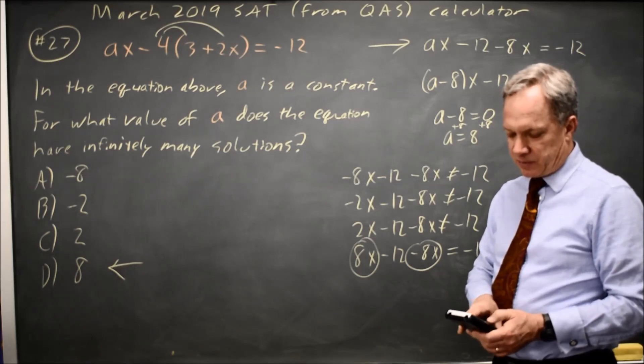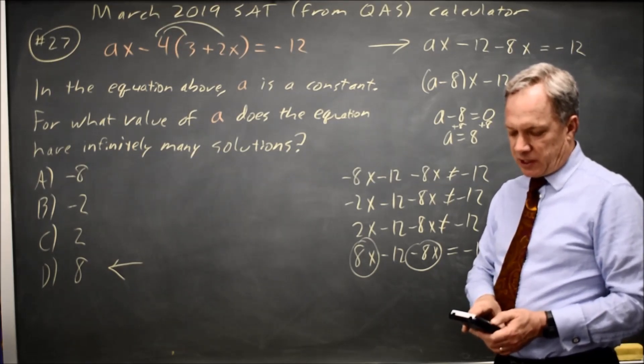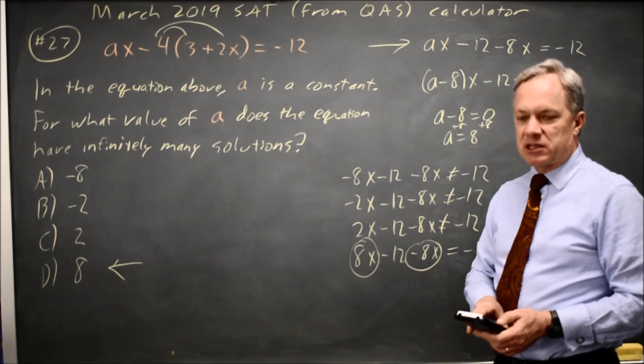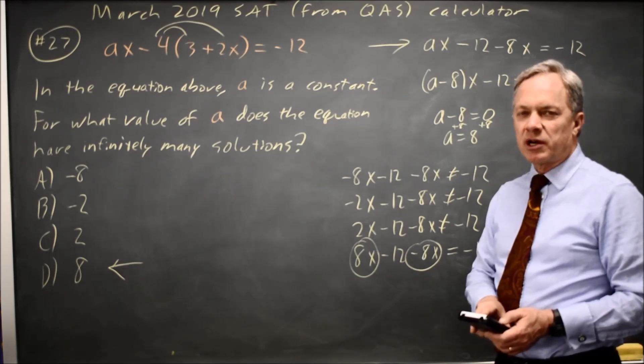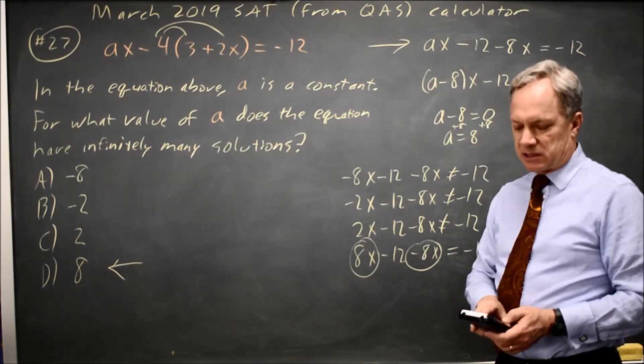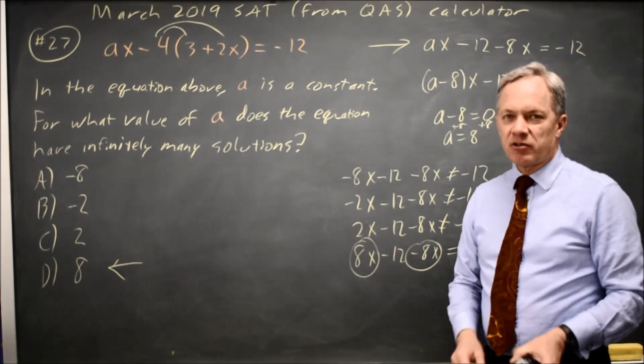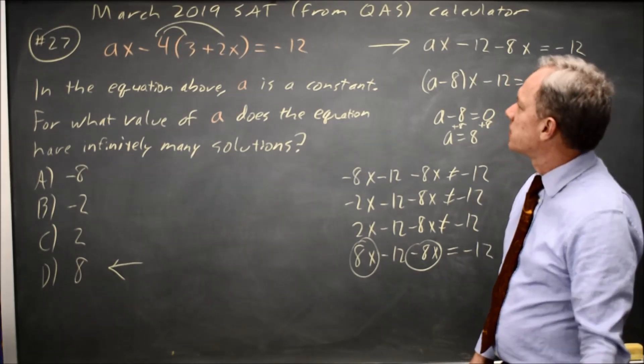Let's try positive 8. With A equals positive 8, I get negative 12 for Y1 for all X in my table. So the calculator verified that choice D is the correct answer.